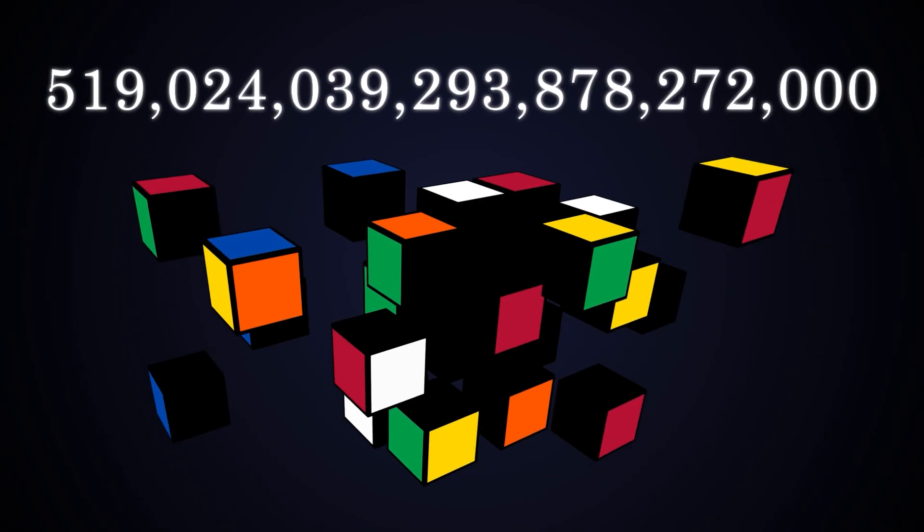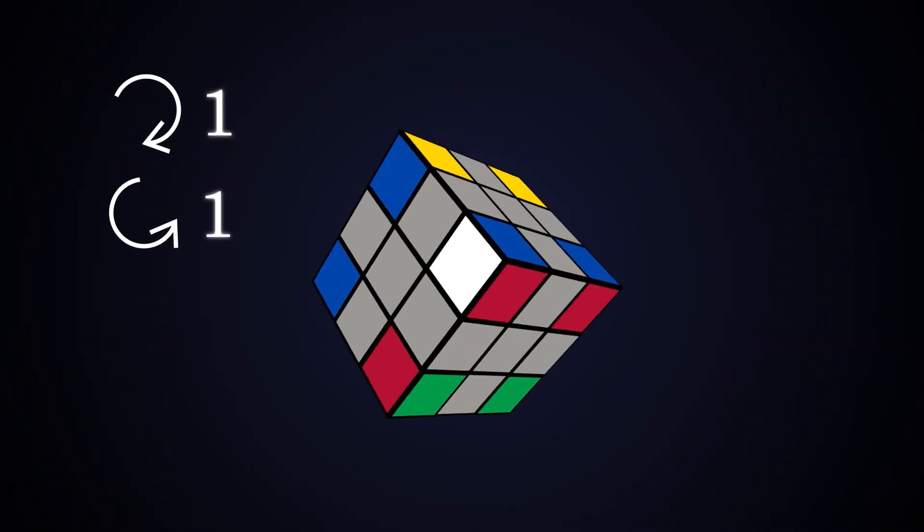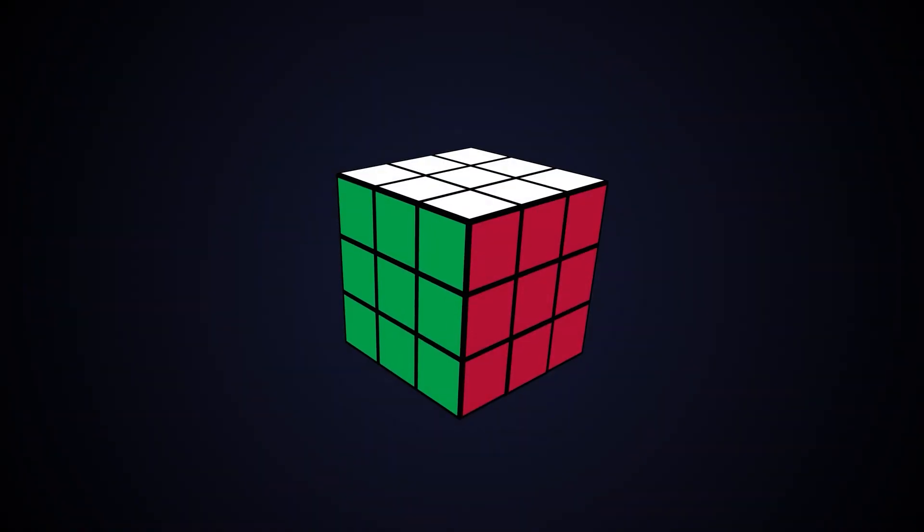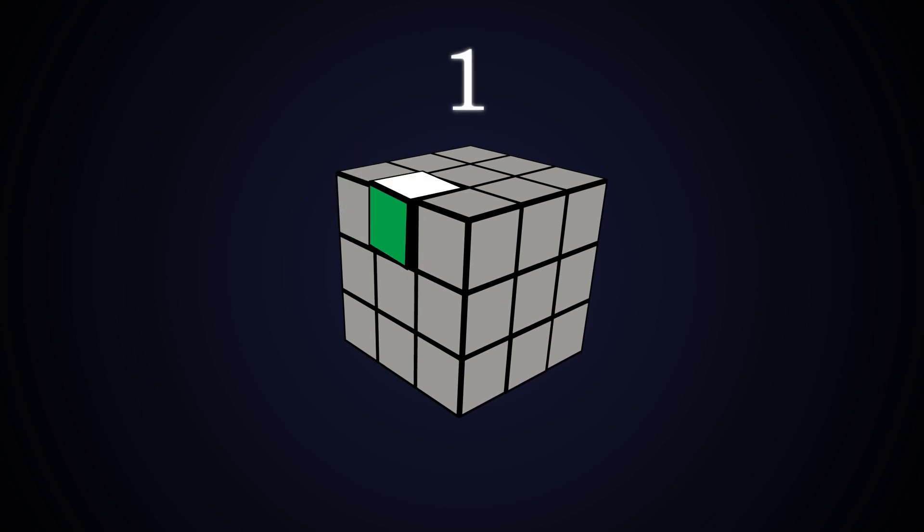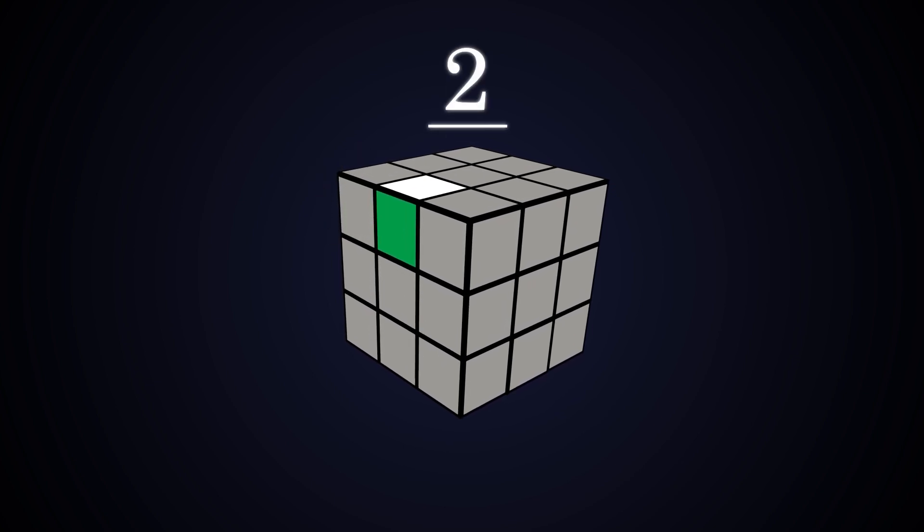We're going to break down exactly why this tiny puzzle has such an astronomical number of possible combinations. To start off, let's focus on just one piece. This edge can either be flipped or solved, so there's two possible ways to position this edge.